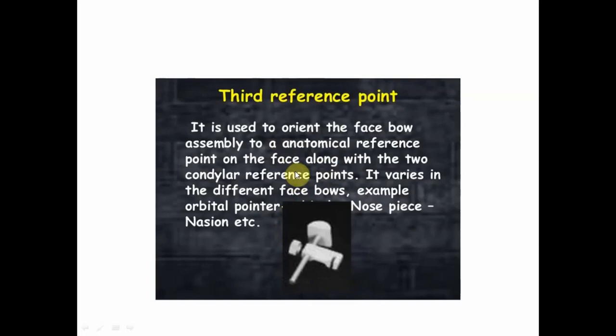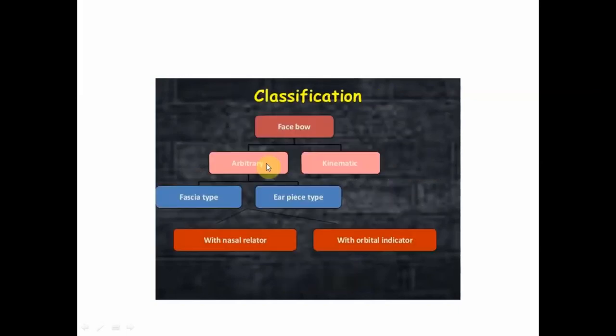The third reference point varies from facebow to facebow. In the Whip Mix type of facebow, it is the nasion relater assembly. But in the earpiece type of facebow, it is the infraorbital notch, to which the orbital pointer pin points. The facebow is classified into arbitrary facebow and kinematic facebow.